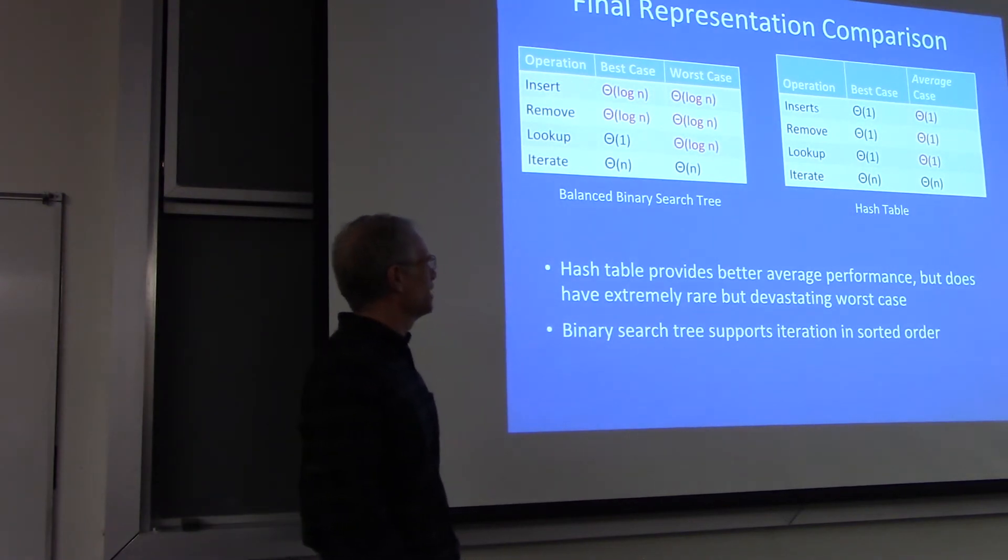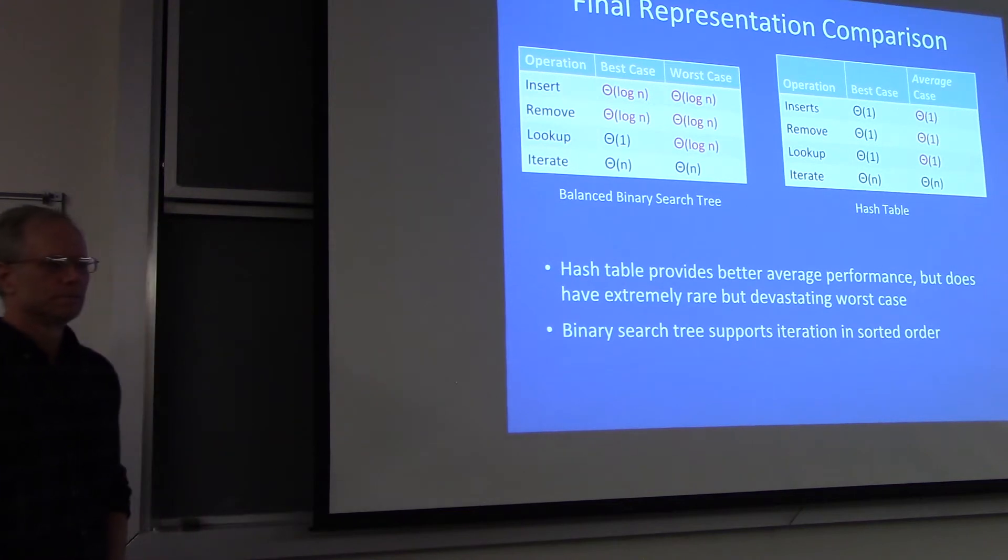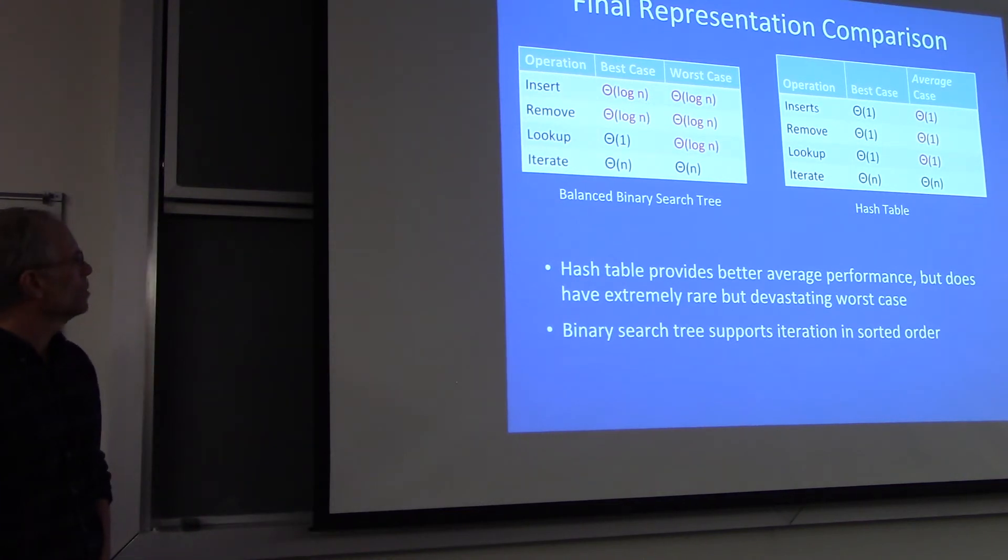And basically operations in the worst case for binary search trees are log n. The average case is constant for the hash table. So why would you ever use a binary search tree, a balanced binary search tree? I don't see any place it wins.